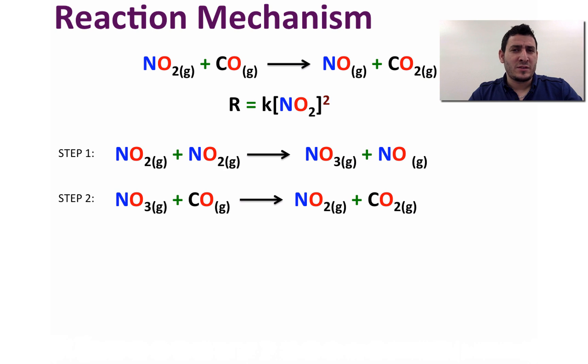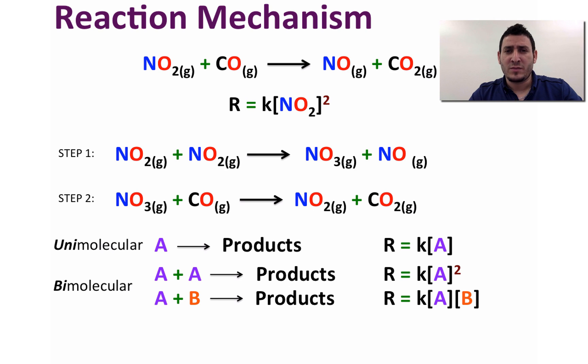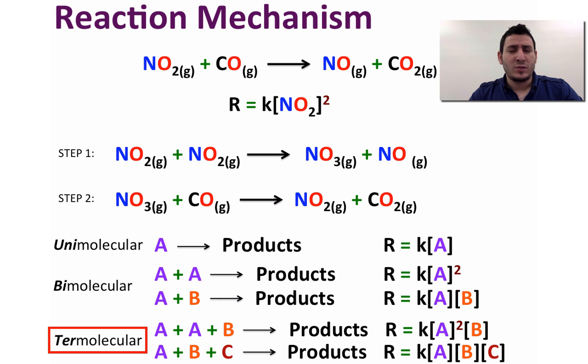Each step is called an elementary step whose reaction rate can be deduced from its molecularity. So what is molecularity? Molecularity is defined by the number of species that must collide to produce the reaction written in every step. For example, reactions with one reactant are called unimolecular, reactions with two reactants are called bimolecular, and reactions with three reactants are called termolecular.